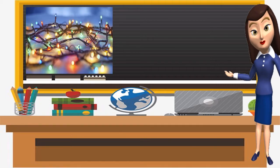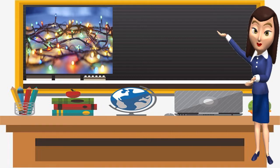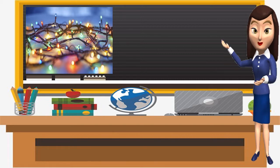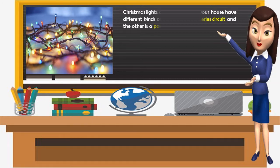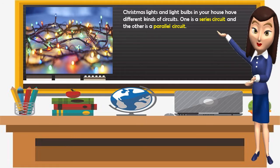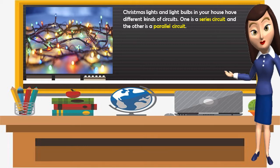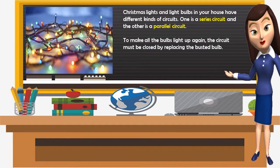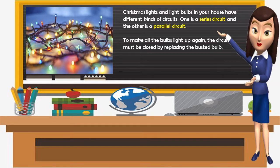I have here a picture. Do you know what it is? Very good — it is a Christmas light. Do you have this at home? Christmas lights and light bulbs in your house have different kinds of circuit. One is a series circuit and the other one is a parallel circuit. To make all the bulbs light up again, the circuit must be closed by replacing the busted bulb.